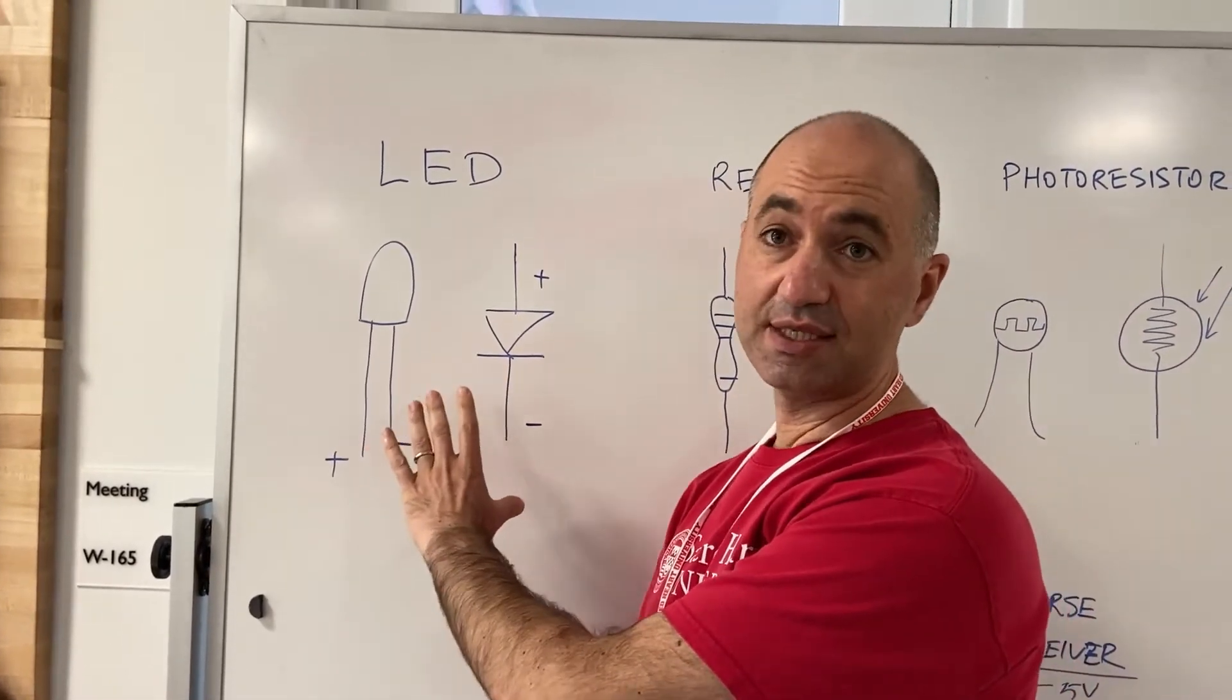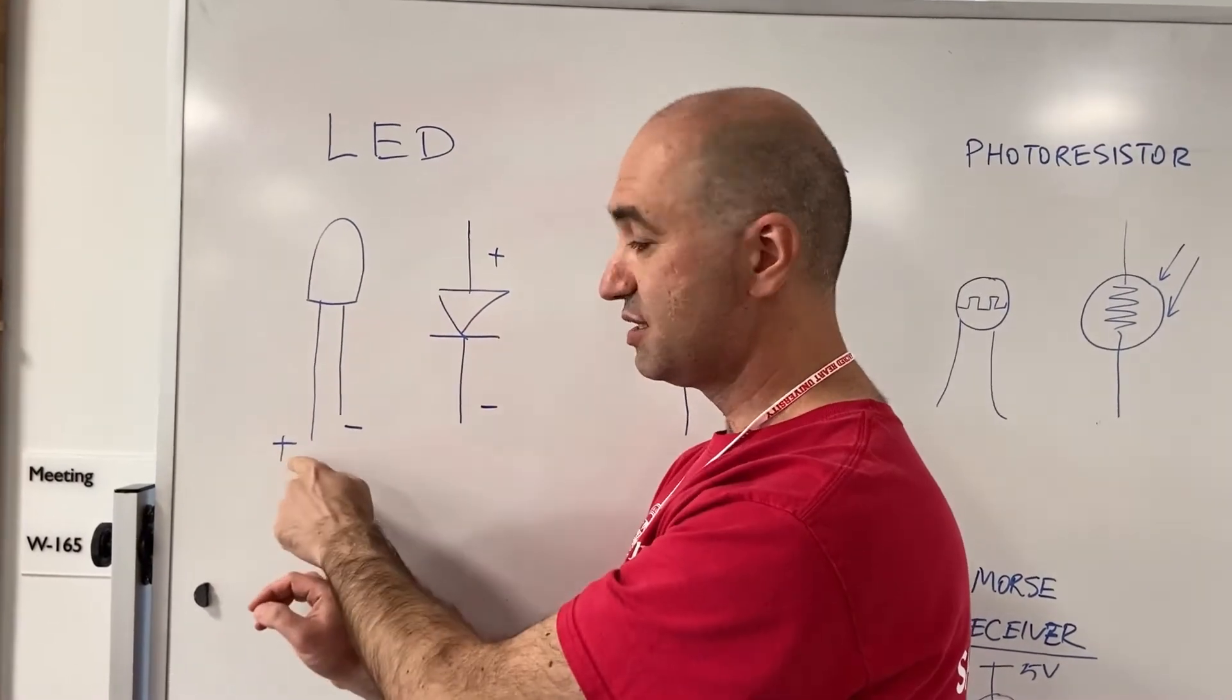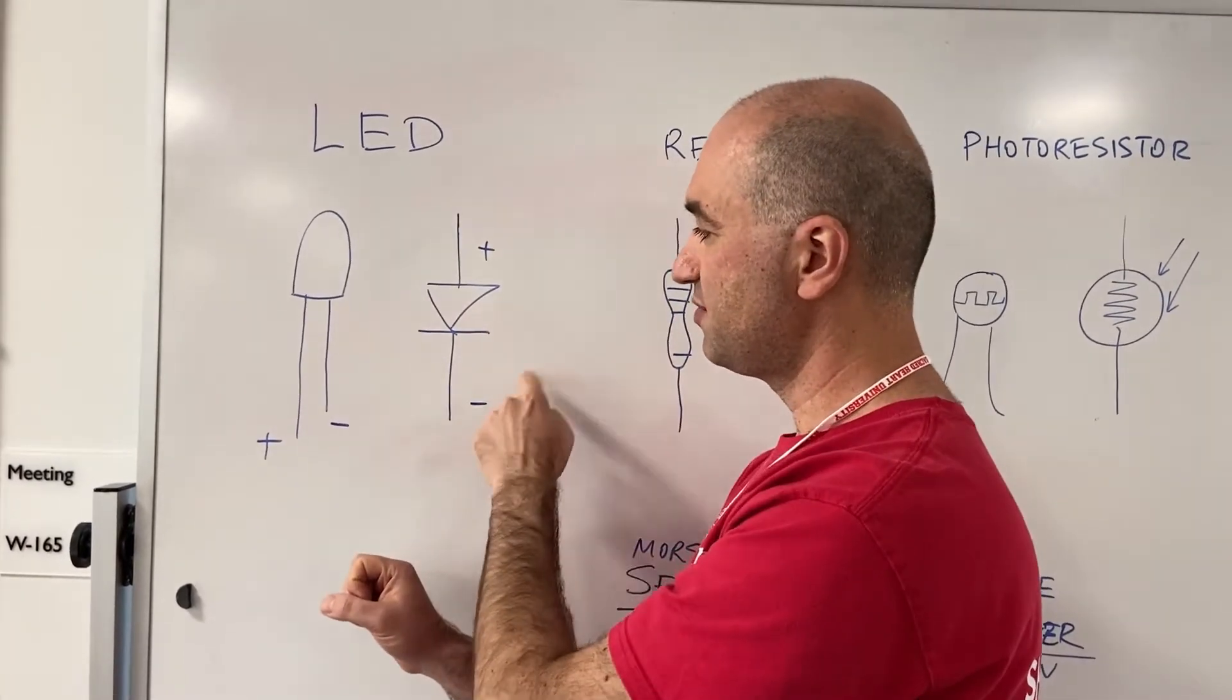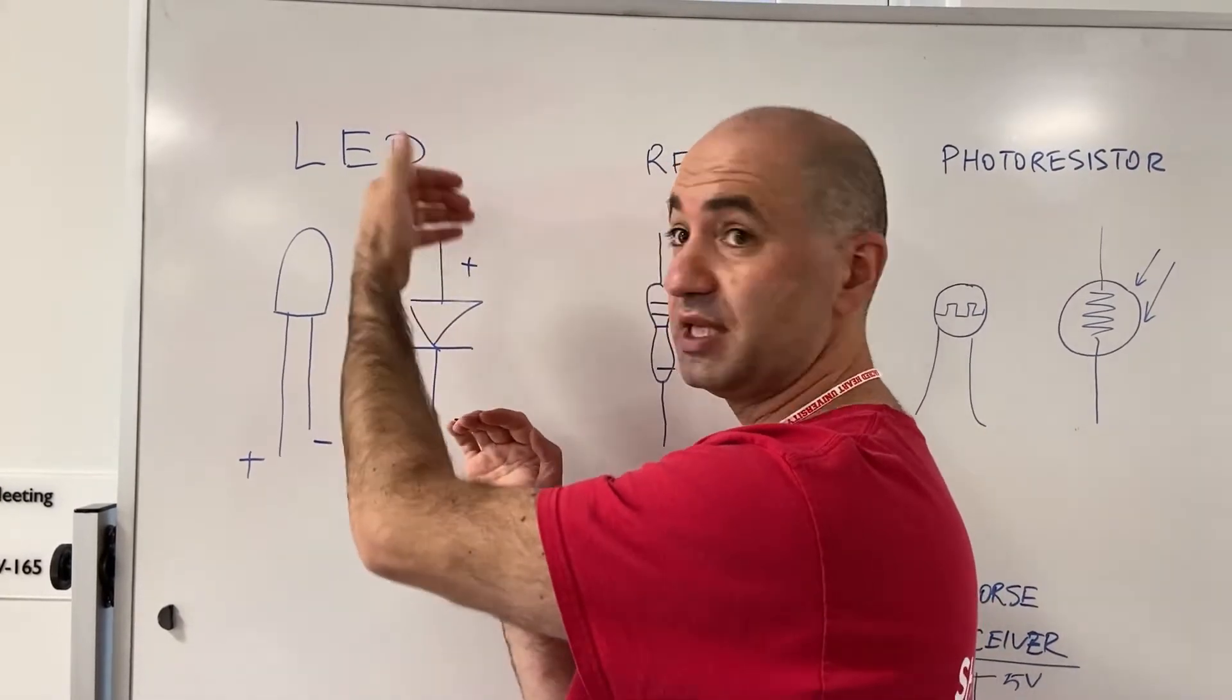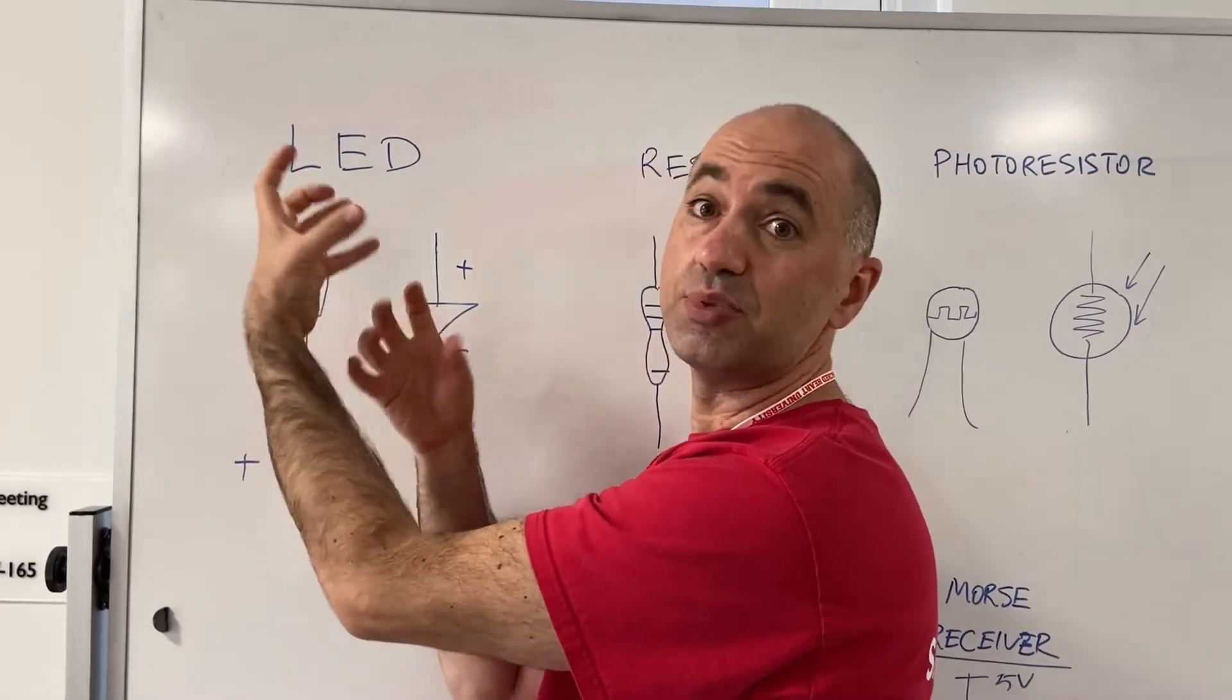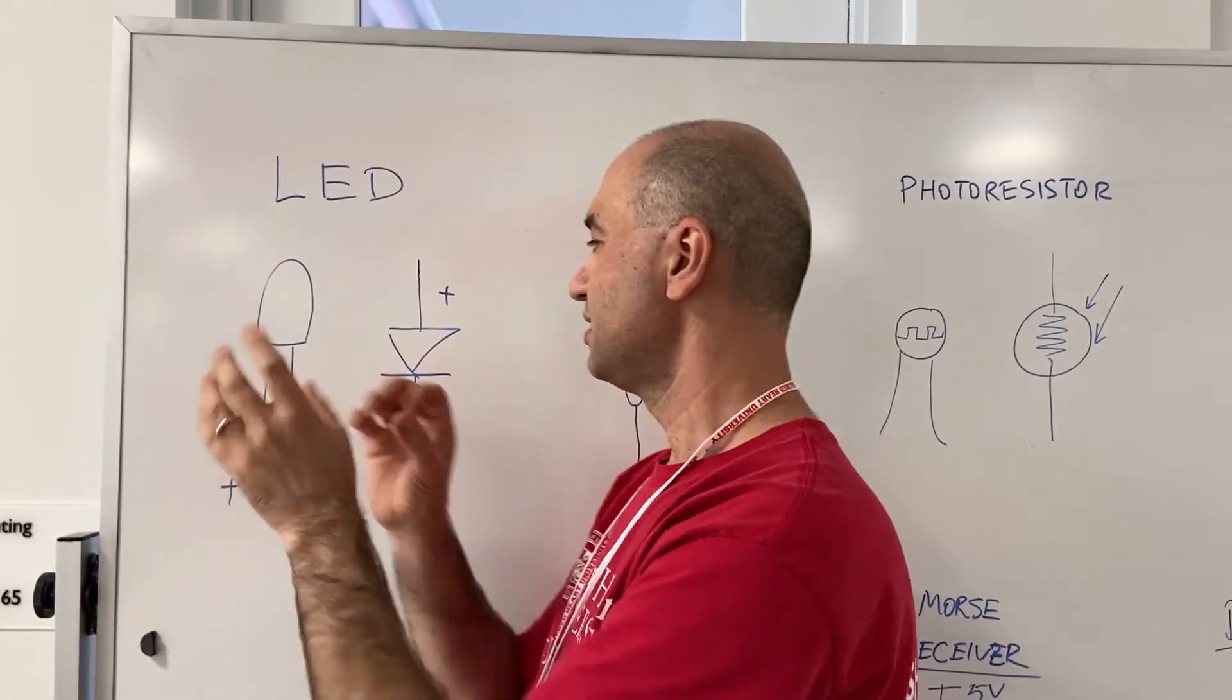The first one is an LED - that's a light emitting diode. This is how it looks like: one leg is longer than the other, this is the positive end and this is the negative end. This is the circuit symbol - a diode symbol with positive and negative. With a diode, the current or electricity goes only one way. For the LED, we apply voltage and it just brightens, it emits light. The LED is like Christmas lights and holiday lights.